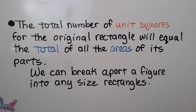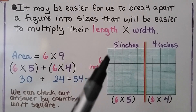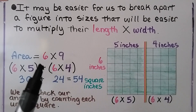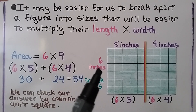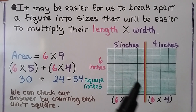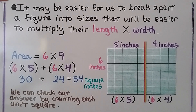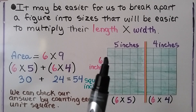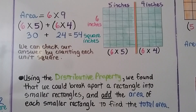We can break apart a figure into any size rectangles — it may be easier to break apart a figure into sizes that are easier to multiply length times width. Here we have a green rectangle: six inches in length and nine inches in width, so six times nine. Using the distributive property, we break the nine into a five and a four: six times five plus six times four. Six times five is thirty, plus six times four is twenty-four — the area for the green rectangle is 54 square inches. We can check our answer by counting each unit square.